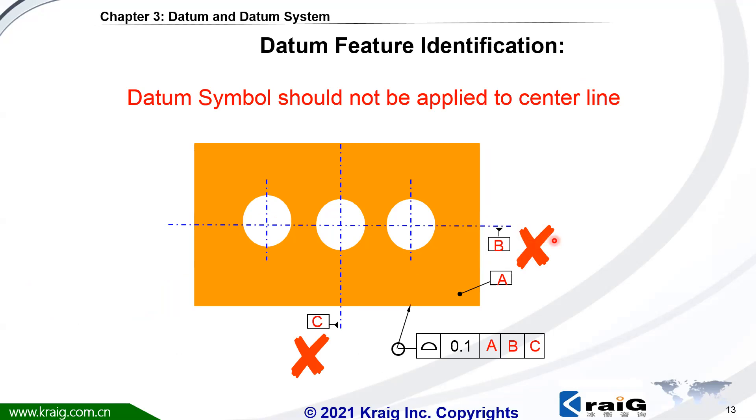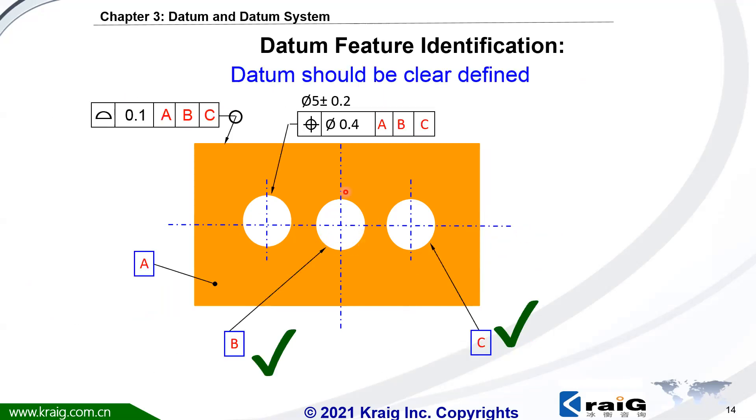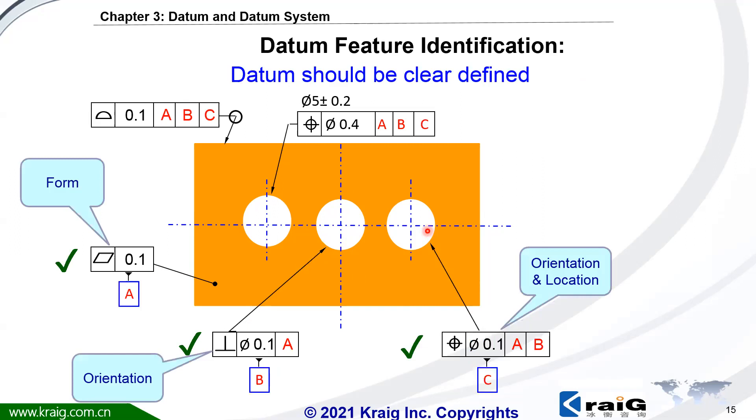We should specify datum directly to the feature, such as here datum B is this hole, datum C is this hole. Or we should specify the geometric tolerance first. Here datum A, there's a flatness, we put datum A here. Datum B is supposed to have an orientation tolerance to A, we put datum B here. Datum C, we're going to have a position tolerance to A and B, then we put datum C here. This is the proper way to specify datum.